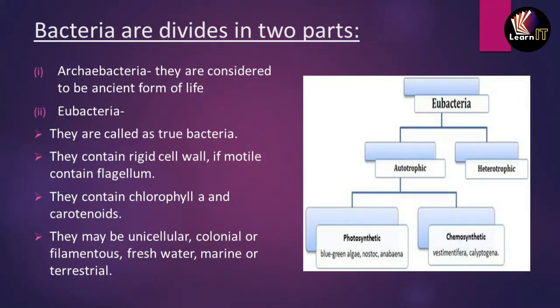Bacteria are divided into two parts: archaebacteria and eubacteria. Archaebacteria are considered the most ancient form of life available till now. Eubacteria are called true bacteria because they contain a rigid, tough cell wall. If they can move, they are called motile, and they can contain flagella. Some of them can contain chlorophyll A and carotenoids.